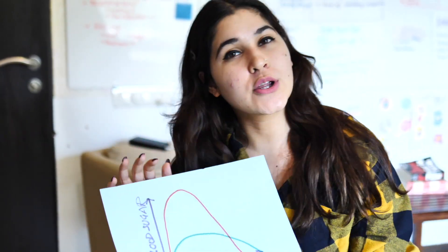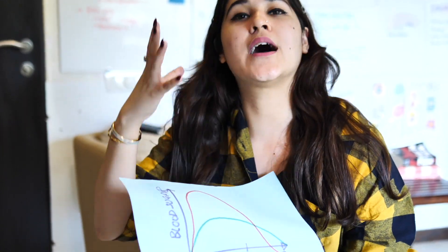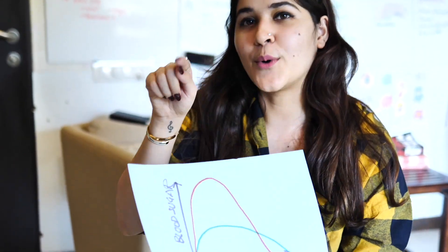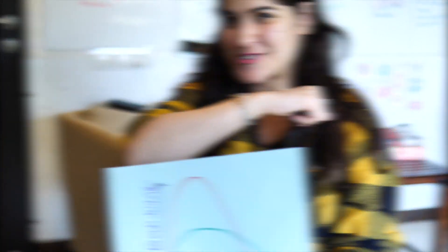Now I'm going to give you examples of foods which have high, moderate, and low GI. Let's do it.